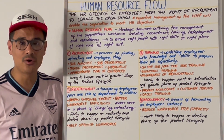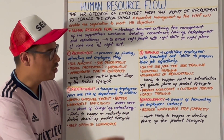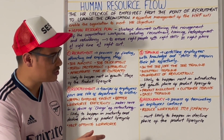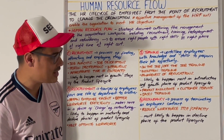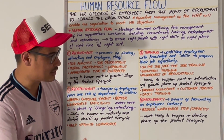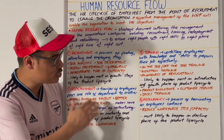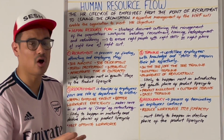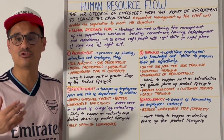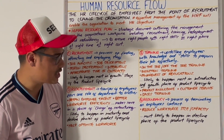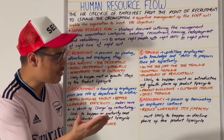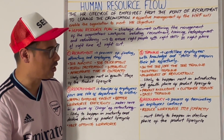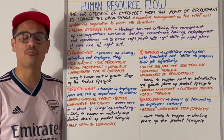The final stage of the human resource flow is redundancy — the process of terminating an employee's contract to reduce the workforce size and effectively reduce the capacity of the organisation. This will most likely happen in the decline phase of the product lifecycle.